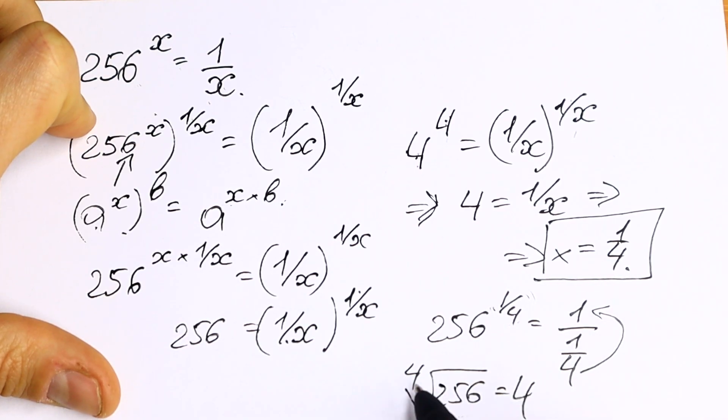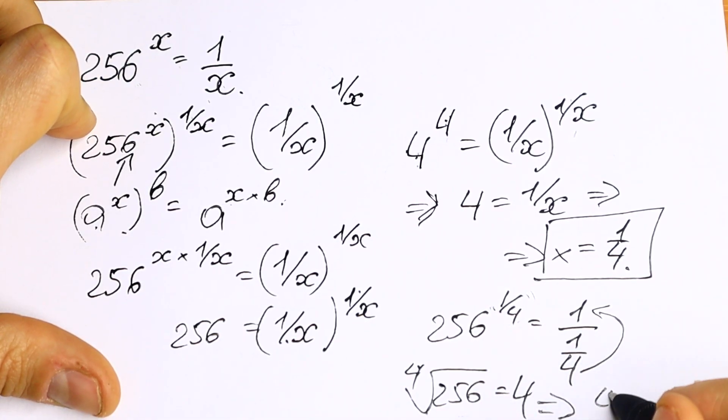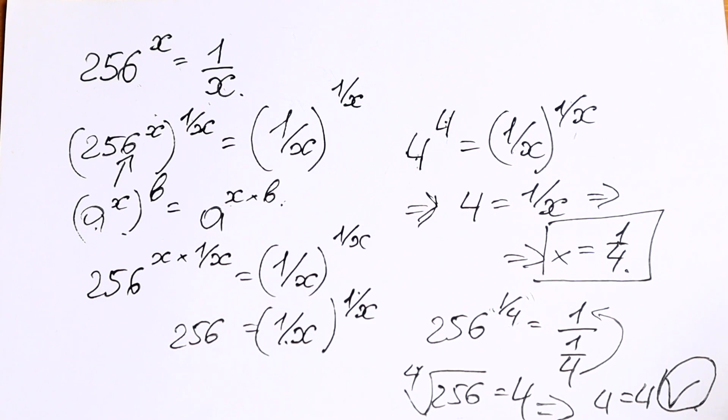We will have four. Is this correct or not? So if you're taking fourth root from this, we will have that four equal to, from here, four equal to four. Which is correct. So our root is good. x equal to one-fourth.